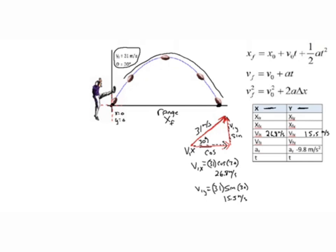So we have our initial velocities. Because our coordinate system starts at the zero-zero position, we plug in zeros for the initial positions in both x and y. The final position in the x direction is what we're looking for — that's the range, x final. The final position in the y direction: it starts at y equals zero, travels up and down, and ends up at y equals zero again. So our final y position is zero, which makes some of the math easier.